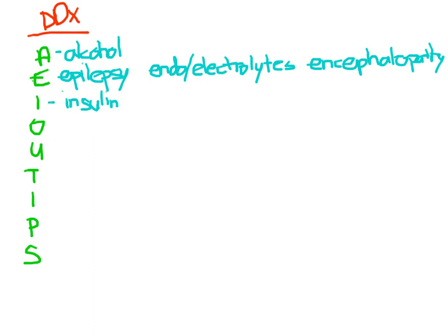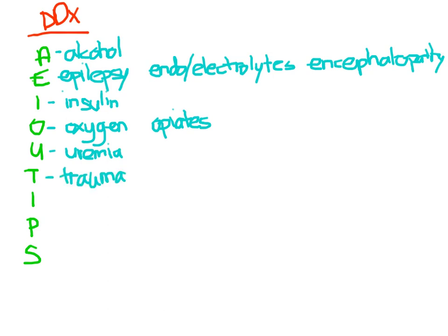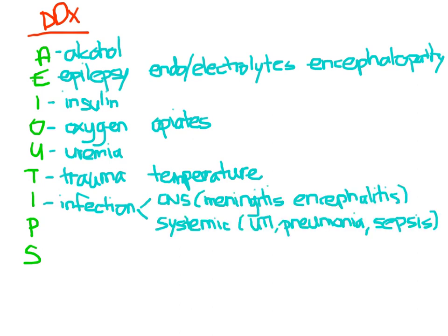I stands for insulin — this could be hyperglycemia or hypoglycemia, DKA, hyperosmolar non-ketotic state, or blood sugar that's just too low. O stands for oxygen and opiates. U stands for uremia and renal failure. T stands for trauma — intracerebral bleed or hypotension from shock preventing blood flow to the brain. T also stands for temperature: they could be hyper- or hypothermic, maybe heat stroke. The next I stands for infection — CNS infection like meningitis or encephalitis, or systemic infection like UTI causing urosepsis, pneumonia, or sepsis.